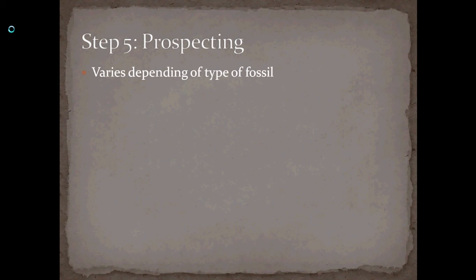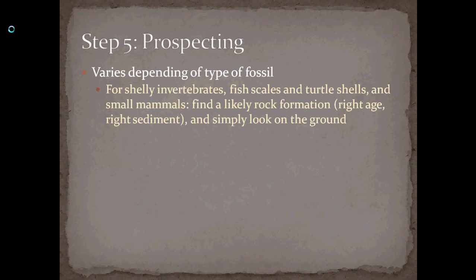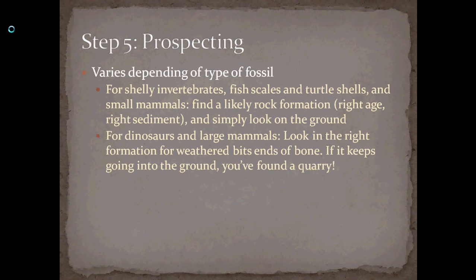Prospecting varies depending on the type of fossil. For small invertebrates, fish shells, turtle shells, and small mammals, you really just have to keep your eyes open. You find a likely rock formation of the right age and the right sediment and crawl around on hands and knees looking for stuff on the ground — there's very little digging that goes into finding invertebrates or small mammals. For dinosaurs and larger mammals, you do something similar: find the right formation in the right area and the right age, then go out and look for the ends of bones that are weathered out. You can dig around that and see if it's just a little random chunk of bone — what we call 'chunkasaurus' — or if it continues back into the hill. If you can find lots of it, you've found a quarry and you've probably got at least a partial skeleton of a dinosaur or a large mammal.